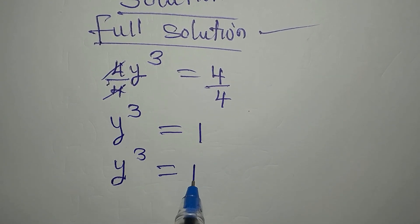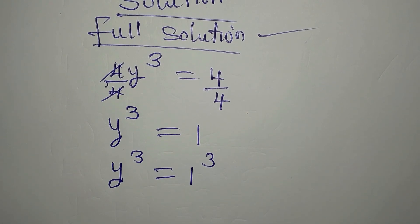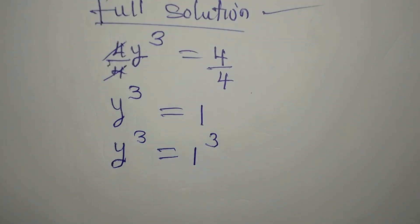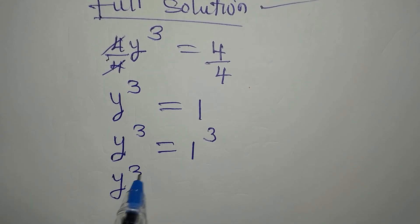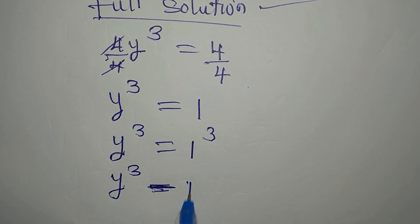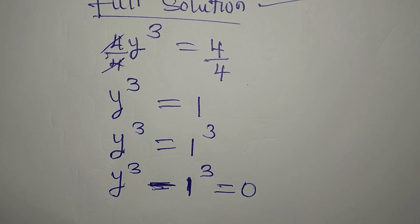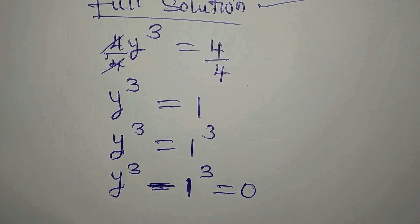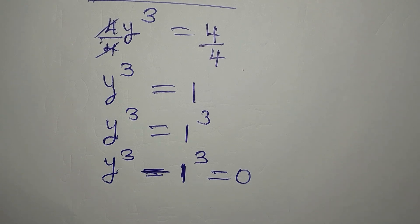What we do is recognize that y³ = 1 is the same as y³ = 1³, making sure they both have the same exponents. Taking this to the left, we have y³ - 1³ = 0. Now we have a difference of cubes on the left-hand side.